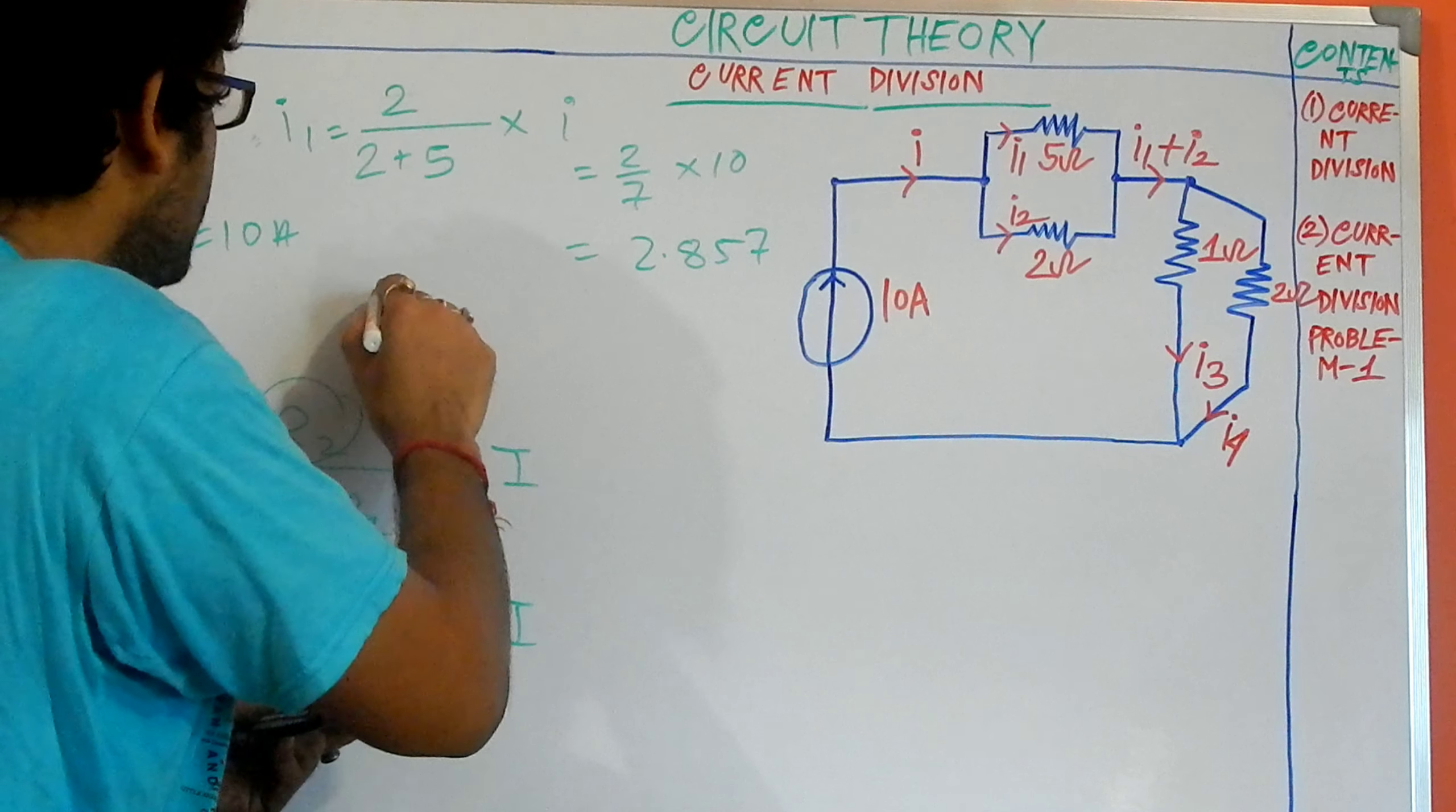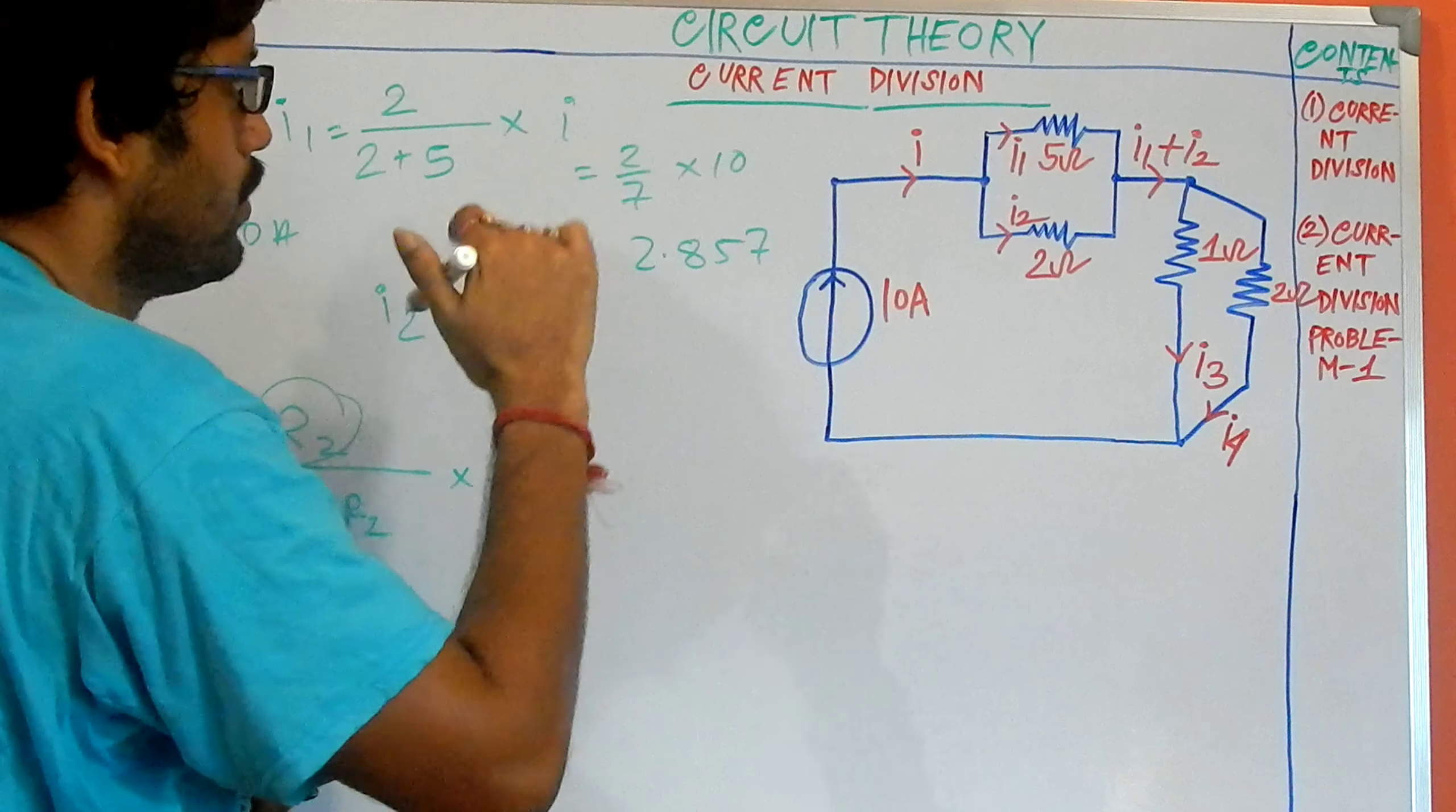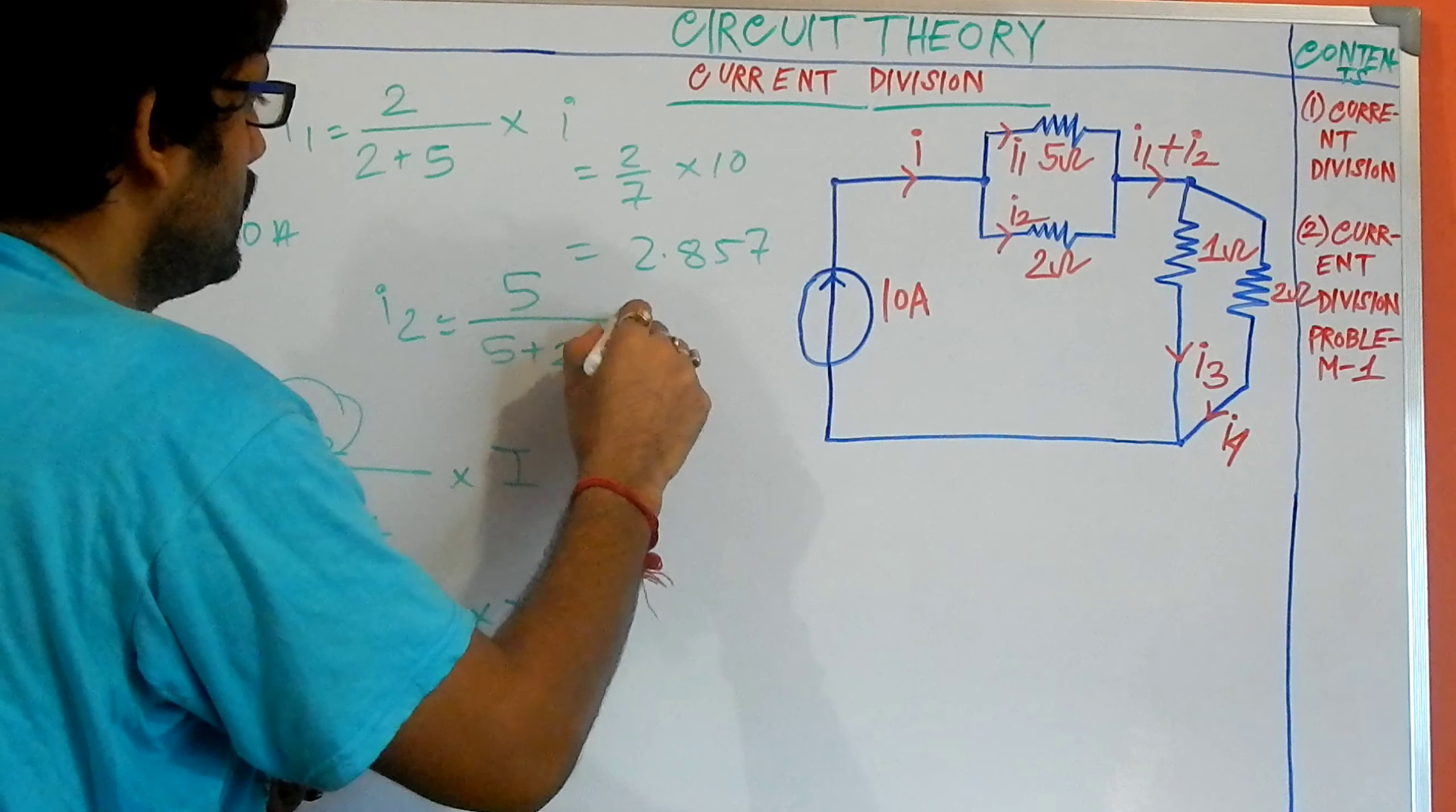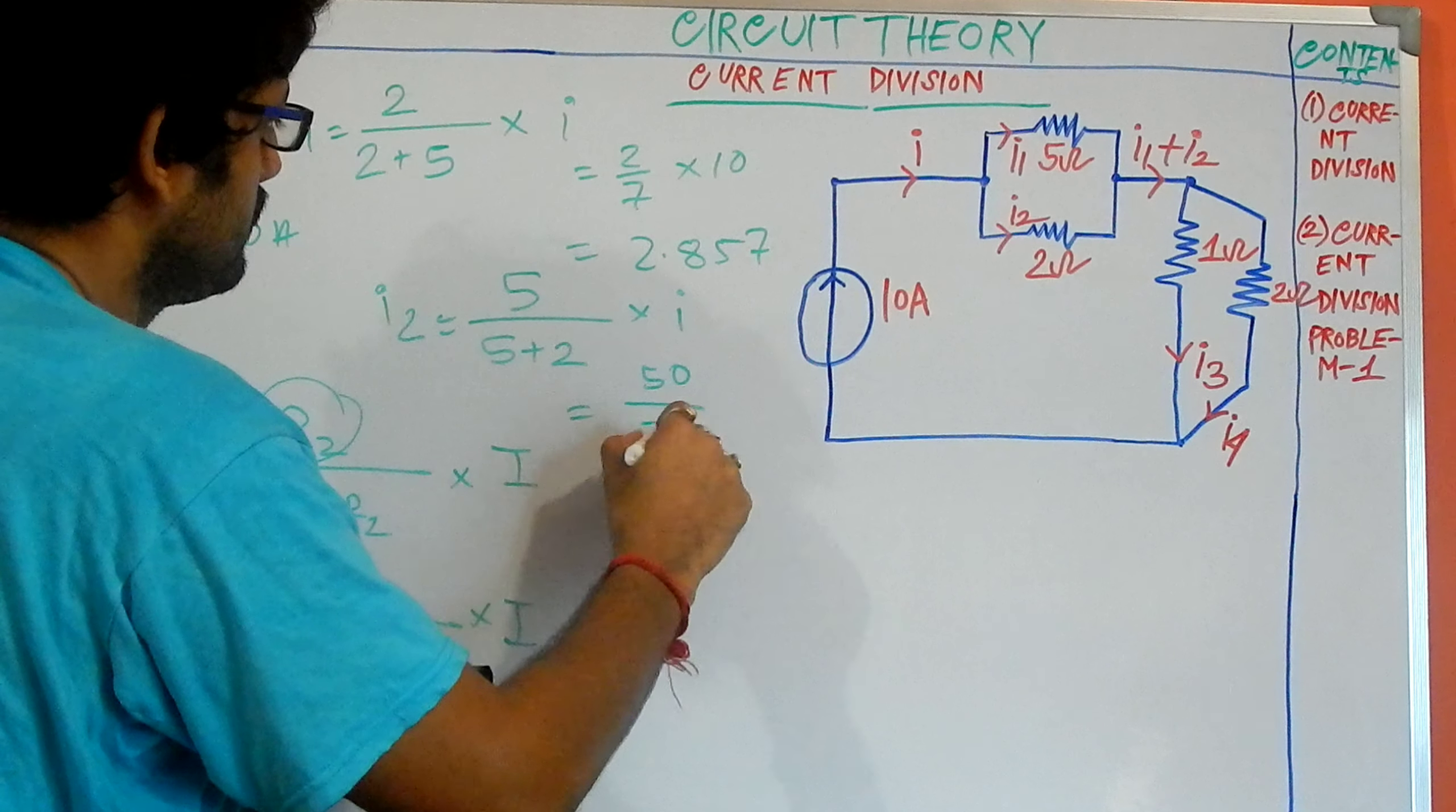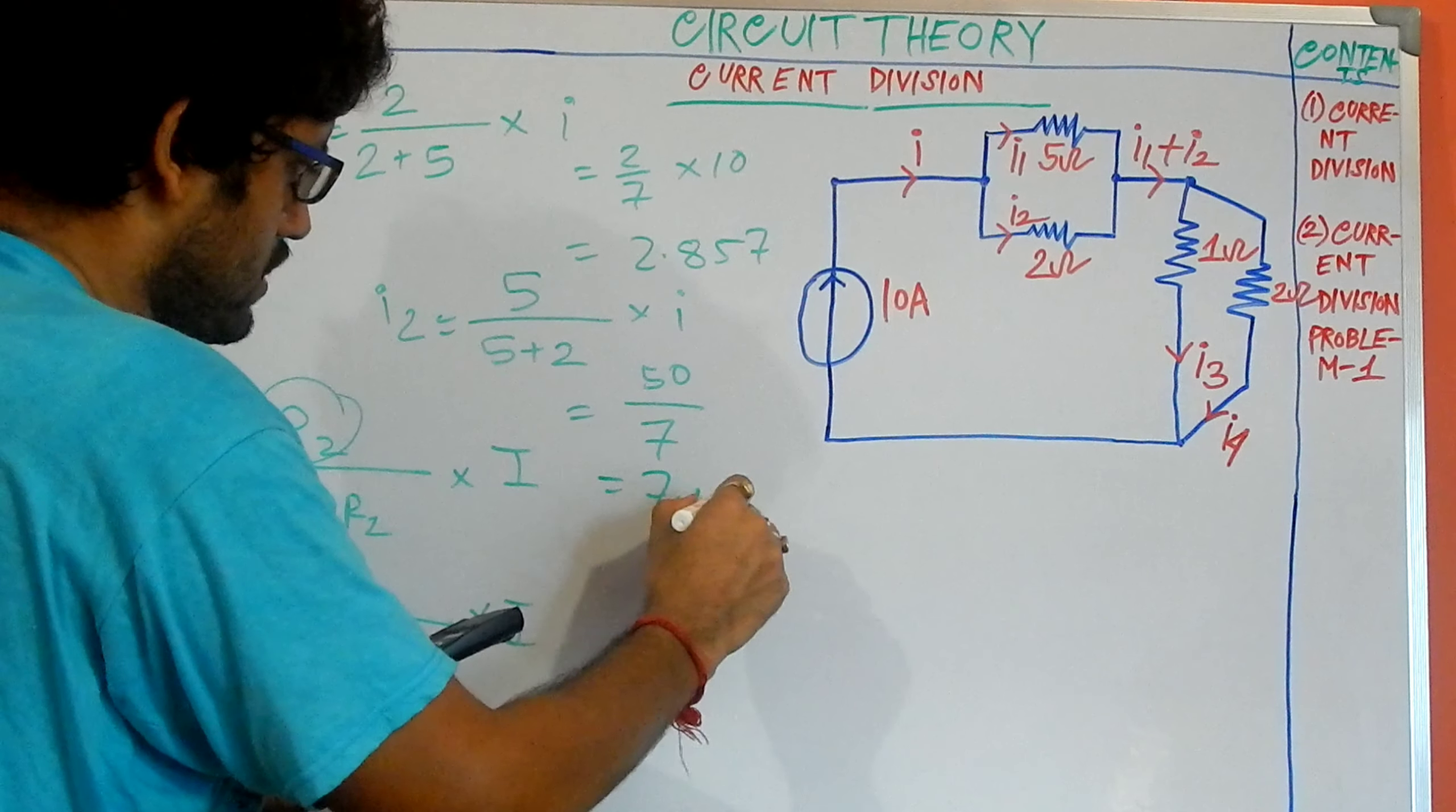And similarly the I2, the resistance should be taken opposite and we will use it with our 2 ohm resistor. So the value is 5 by 5 plus 2 into I. 50 by 7, and the value is 7.142.